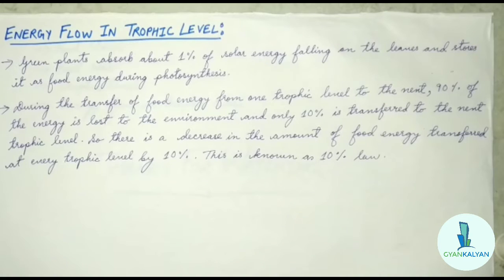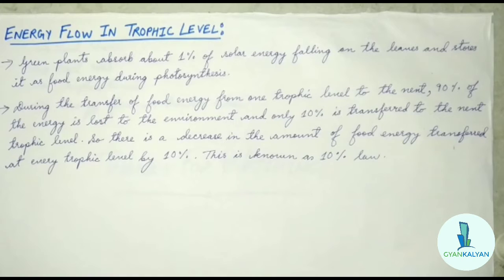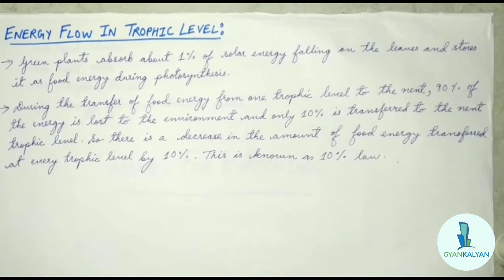The green plants in a terrestrial ecosystem capture about 1% of the energy of sunlight that falls on the leaves and convert it into food energy during photosynthesis. When green plants are eaten by primary consumers, a great deal of energy is lost as heat to the environment, some amount goes into digestion and doing work, and the rest goes towards growth and reproduction. During the transfer of food energy from one trophic level to the next, 90% of energy is lost to the environment and only 10% is transferred to the next trophic level.